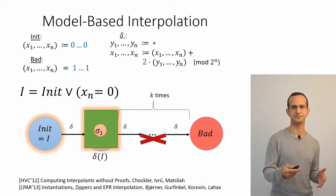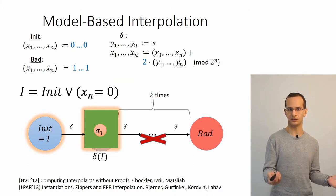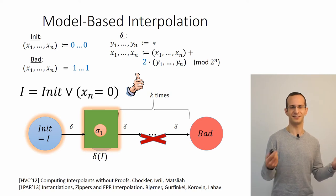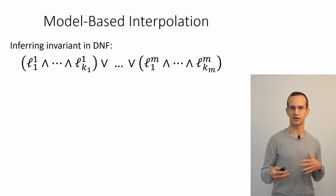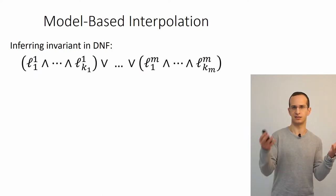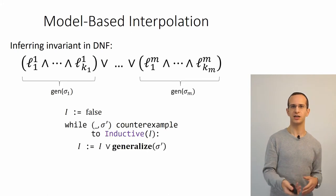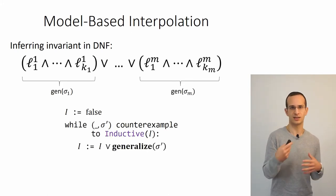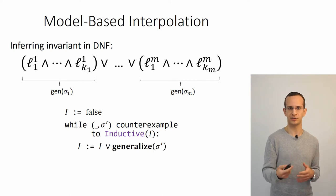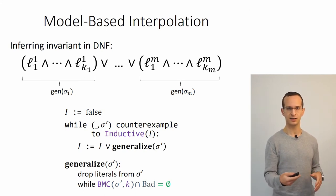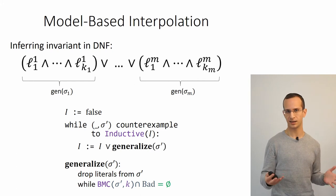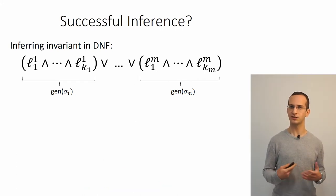After doing this to all literals, we get the interpolant that the least significant bit is zero, and we add this to the invariant. This candidate is already an inductive invariant, so we have found one and established the safety of the system. The algorithm computes a candidate invariant in disjunctive normal form—a disjunction of conjunctions—where each conjunction is generated from some counterexample to inductiveness of the previous candidate, and generalization happens by dropping literals as long as no state in the candidate can reach a bad state in k steps.